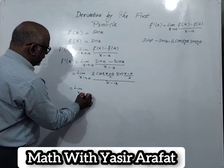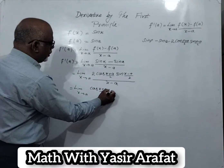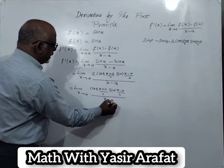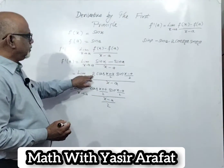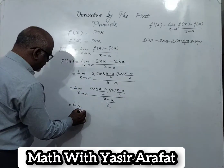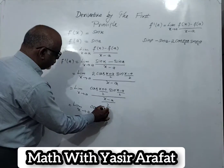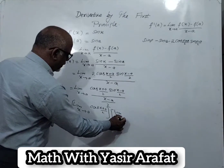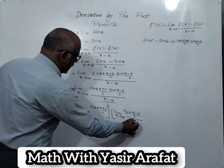Now, with the limit x tends to a, we rearrange this. This becomes: limit x tends to a, 2 cos((x plus a)/2) times sin((x minus a)/2), whole divided by x minus a. When we reciprocal x minus a divided by 2, we get 2 in the previous position. So we rearrange: limit x tends to a of cos((x plus a)/2), times limit x tends to a of sin((x minus a)/2) divided by (x minus a)/2.